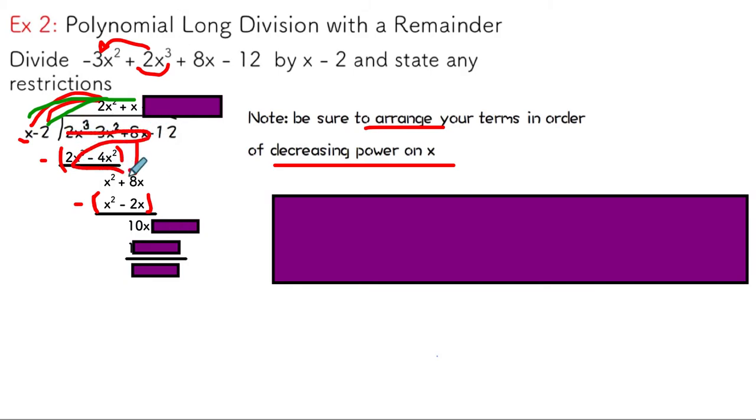You're essentially, if you think about it, done with all of this stuff and you're continuing on. But before we continue on, it's important for us to bring down that negative 12 so that we have enough terms to continue. And then I start over again. I say, well, what's 10x divided by x? We'll get 10 and I'm going to take that 10 and I'm going to do the same procedure.